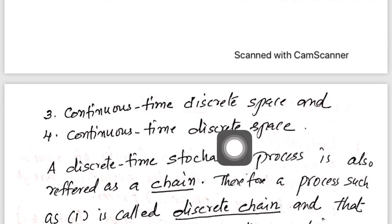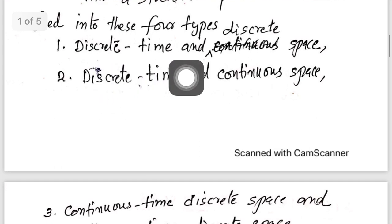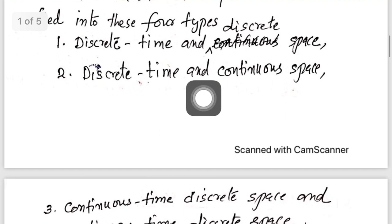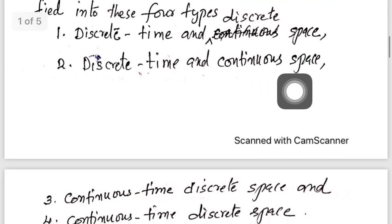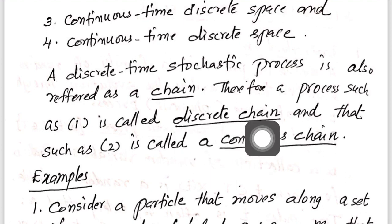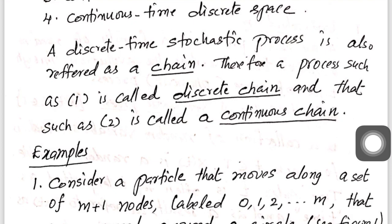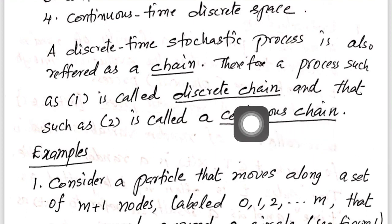There is a correction — the last type is a continuous space stochastic process. After that, we defined what a chain is: a chain is a stochastic process having discrete time. So discrete time discrete space and discrete time continuous space stochastic processes are called chains. A chain with discrete state space is called a discrete chain, and a chain with continuous state space is called a continuous chain. We will later see a special type of chain called a Markov chain, which is a discrete chain.